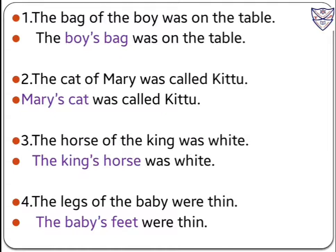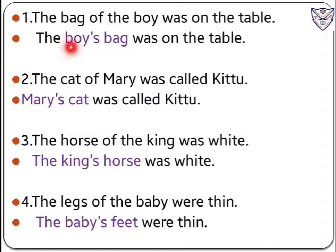Now let us see a few examples. First one: the bag of the boy was on the table. When we write this sentence in possessive case form, the answer will be: the boy's bag was on the table. In this sentence, when we say the boy's bag was on the table, it means that the bag belongs to the boy.